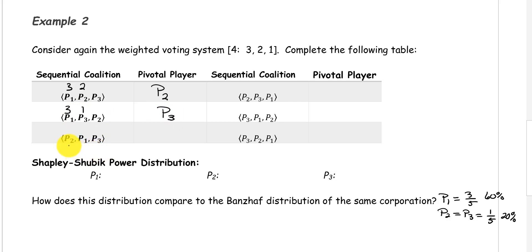The sequential coalition with player 2, player 1, player 3: player 2 has a weight of 2, player 1 has a weight of 3, and now we have met the quota. So player 1 is our pivotal player.